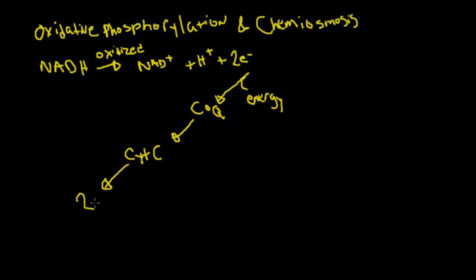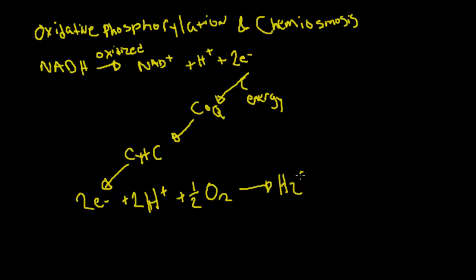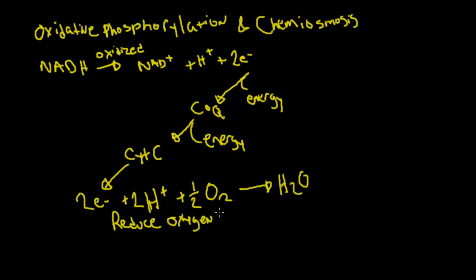We'll have two electrons plus two hydrogens plus one half O2 — since it's O2 I'm drawing it as one half, just like I did in the last video — and this is going to be reduced to H2O, which is water. So we've oxidized NADH through this whole process and given off some energy, and at the end we reduce oxygen to water.